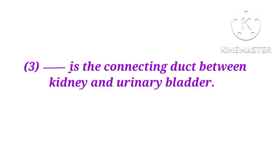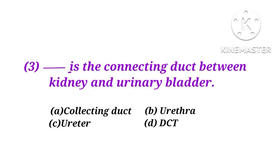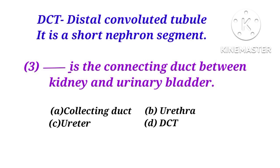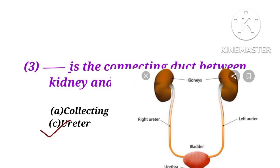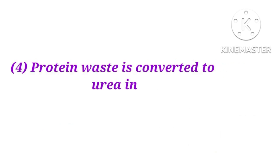Number 3. What is the connecting duct between the kidney and urinary bladder? Options: collecting duct, urethra, ureter, or DCT (distal convoluted tubule, which is the third nephron segment). The answer is C. Ureter is the connecting duct between the kidney and urinary bladder.